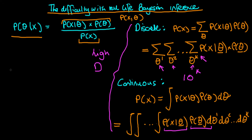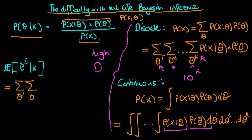Suppose we actually could calculate the denominator term — are we then free of all our troubles? Typically in Bayesian inference, one of the things we want to calculate are measures that summarize the posterior. The most common posterior measure is the expected value of some parameter theta_i conditional on the data. For the discrete case, we work this out by summing over theta_1, theta_2, etc., up to theta_k, weighting the posterior distribution by theta_i — so theta_i times P(theta|x). Again, we're doing a sum with many, many terms, and we run into exactly the same difficulty of high dimensionality as when working out the denominator term.